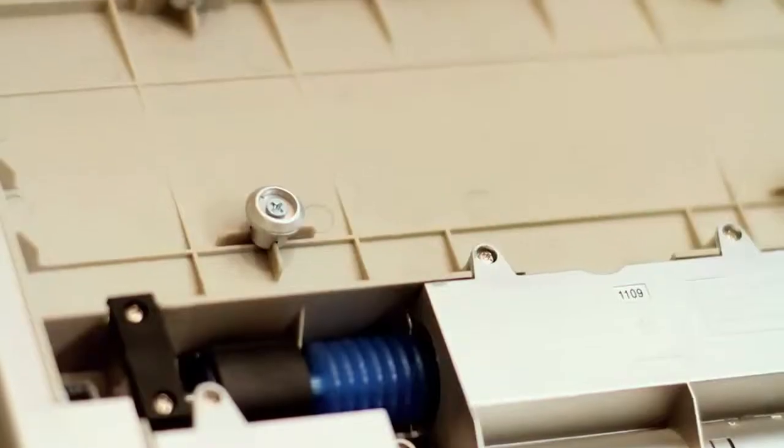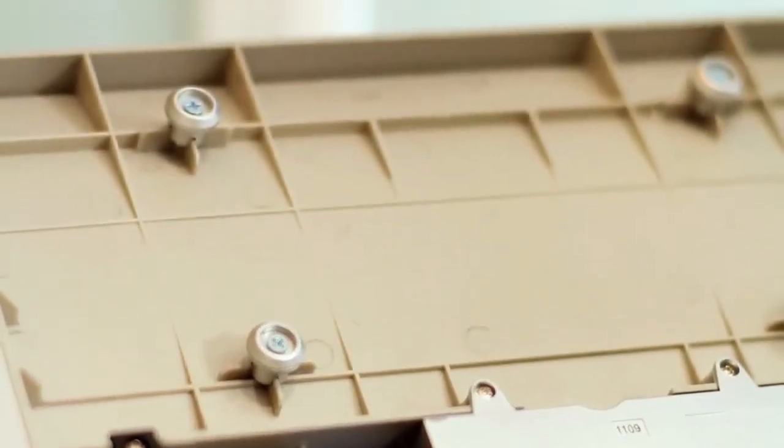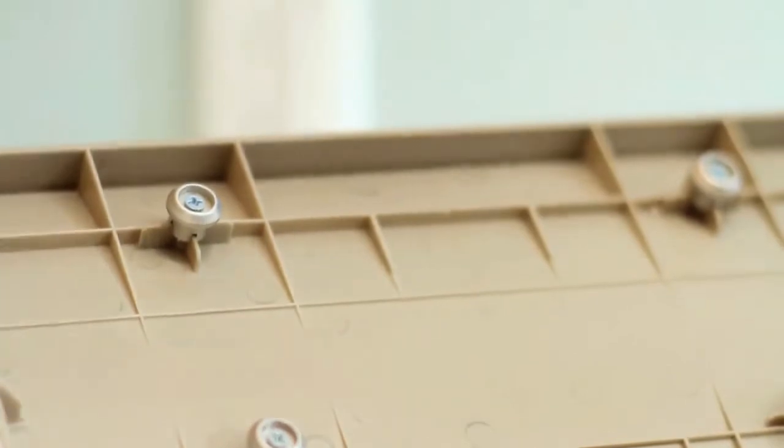Now if you look at the top of your dispenser, you'll see that it comes with mounting posts already installed. Now these are for a flush mount. If you prefer or if your cabinet fascia requires that the dispenser hang lower,